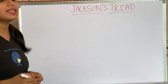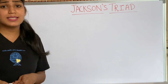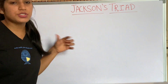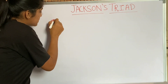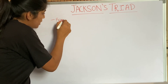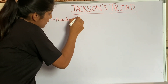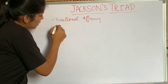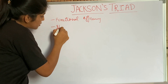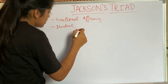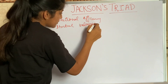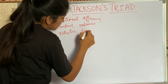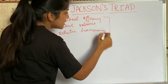The aims and objectives of orthodontics have been summarized by Jackson as the Jackson Triad. The three main objectives are: first, functional efficiency; second, structural balance; and third, aesthetic harmony.